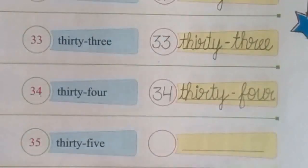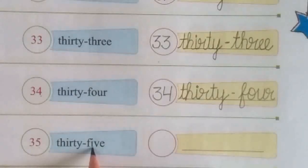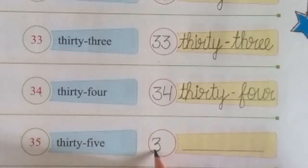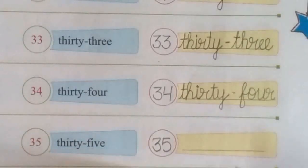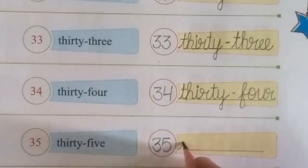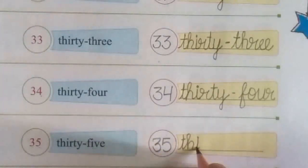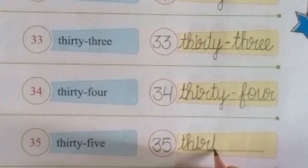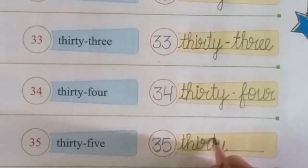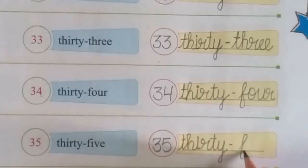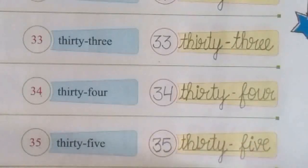Next: 3, 5 — 35. Jis mein 3 tens aur 5 ones hain. Write here 35. The number name is T-H-I-R-T-Y, 30, dash, F-I-V-E, 5. Thirty-five.